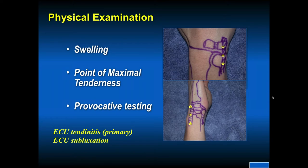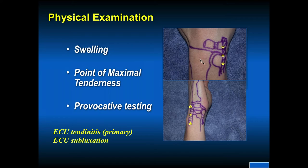What do we think about with ulnar-sided wrist pain? Swelling, point of maximum tenderness, provocative testing. Extensor carpi ulnaris is outlined here — you can have a primary tendinitis of this or a subluxation. The TFCC is right there too, in a very small area. The things to think of would be a TFCC injury, instability of the distal radial ulnar joint, and if it's more in a tendon distribution, a problem with the extensor carpi ulnaris.